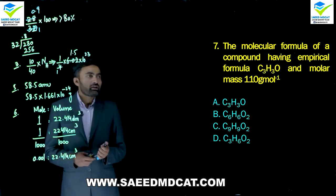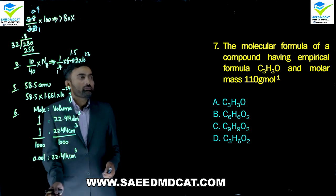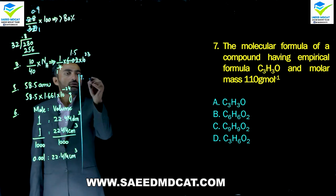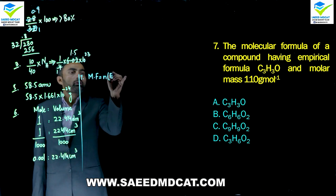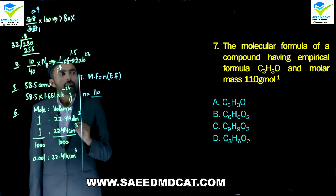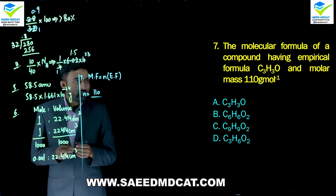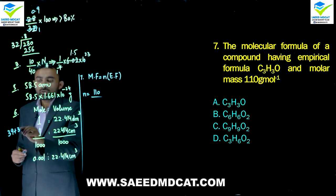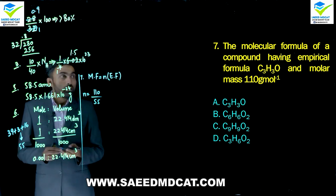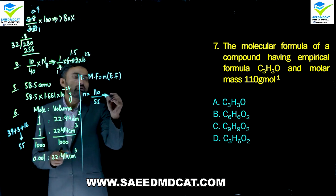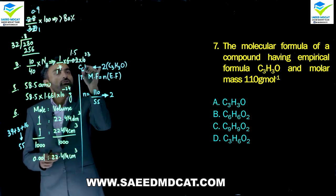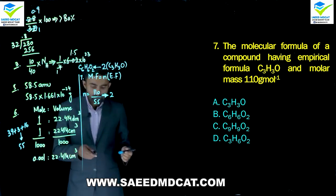Question 7: Molecular formula of a compound with empirical formula C3H3O and molecular mass 110 g/mol. n = molecular mass ÷ empirical formula mass. Empirical formula mass = 3(12) + 3(1) + 16 = 36+3+16 = 55. So n = 110/55 = 2. Molecular formula = 2 × C3H3O = C6H6O2, which is the correct option.